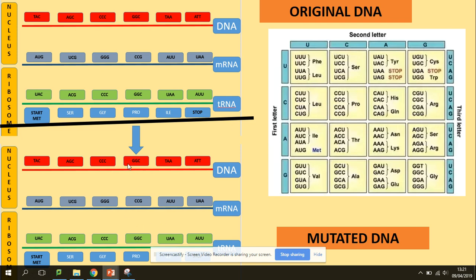So let's look at what the mutation is. We've changed one of the bases on the DNA — rather than guanine, we now have adenine. That will then affect the mRNA sequence because adenine binds with uracil. The corrected mRNA codon becomes AGC, so the tRNA anticodon and amino acid sequence will also change.